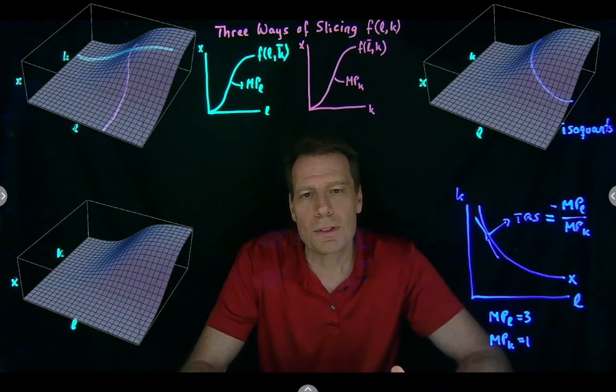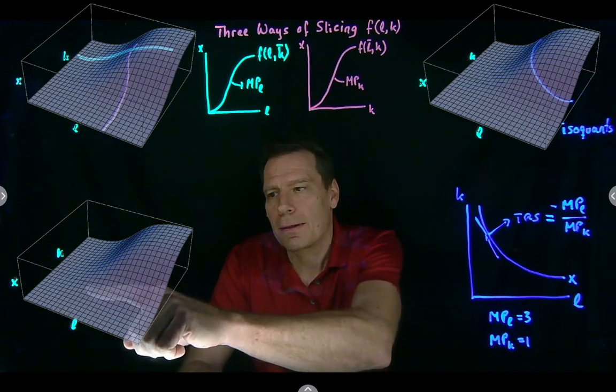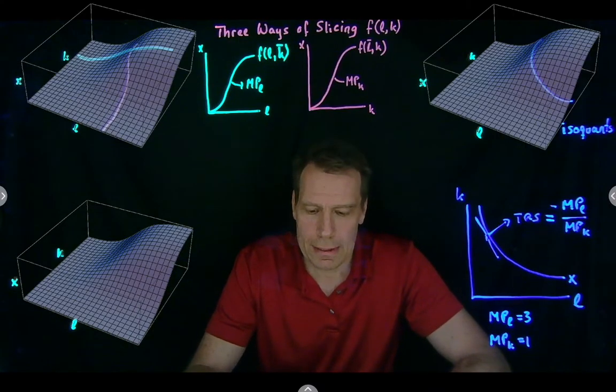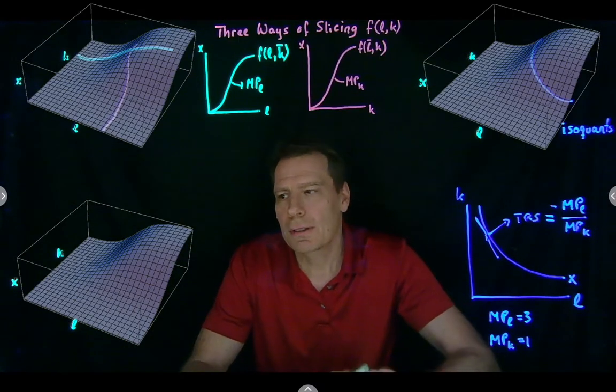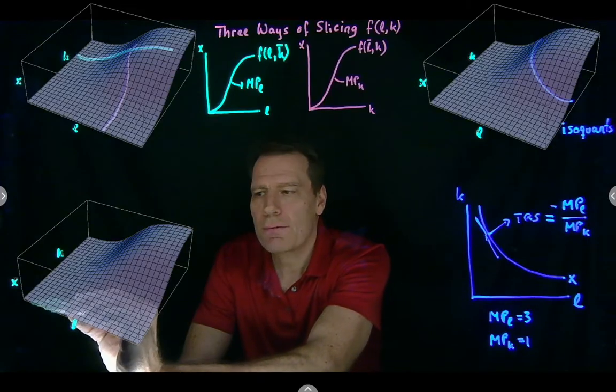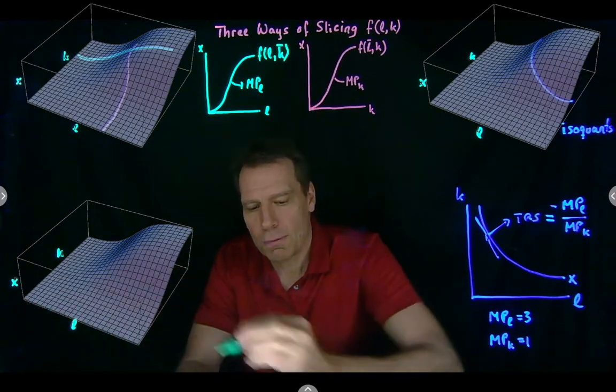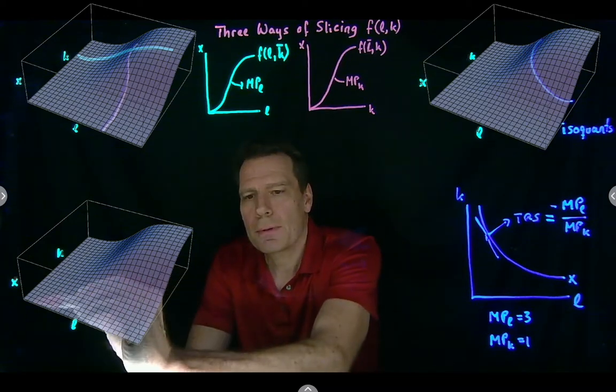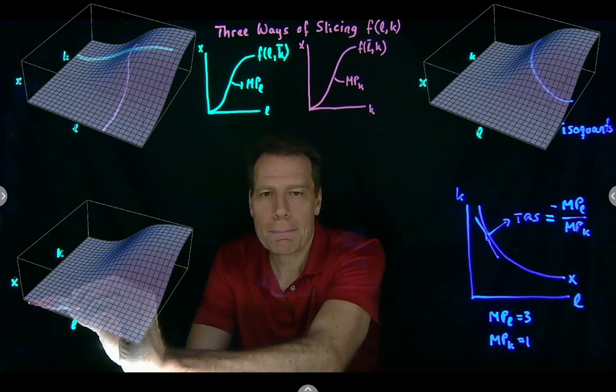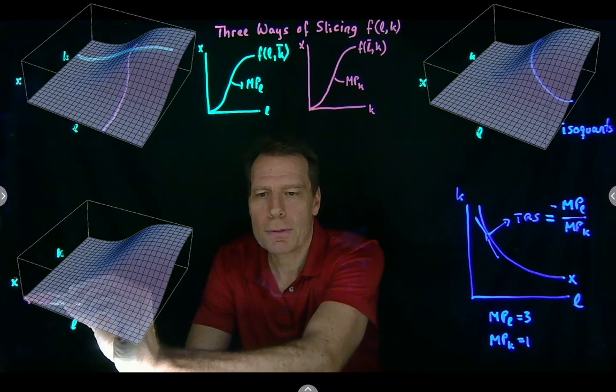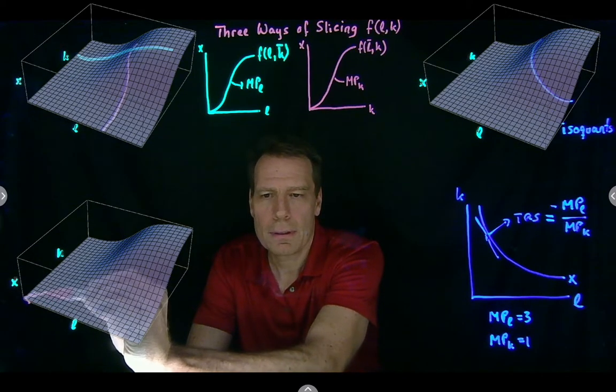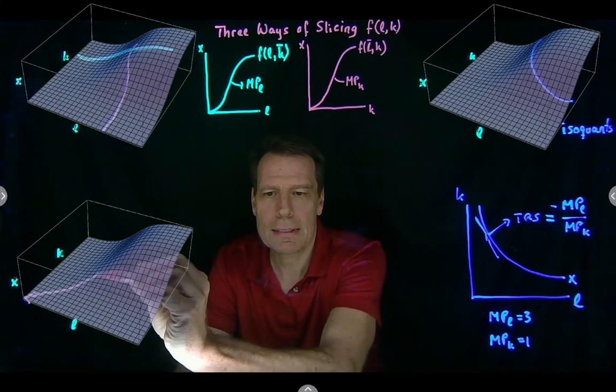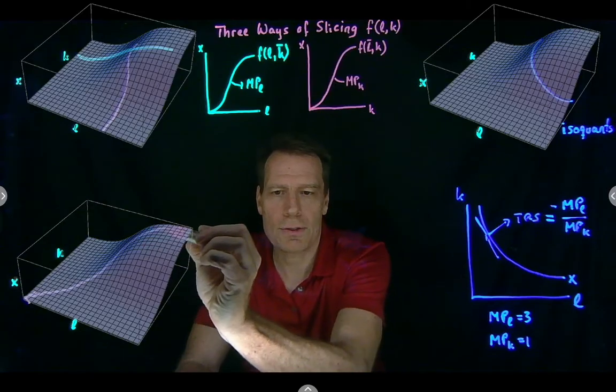Finally, we took a different slice in the last module. In that case, we looked at what happens along a ray from the origin. So if we look at a ray from the origin, we're just moving up this mountain, varying both capital and labor by the same proportion. So we're moving along. Initially, it gets steeper and steeper, and eventually, it gets shallower and shallower.